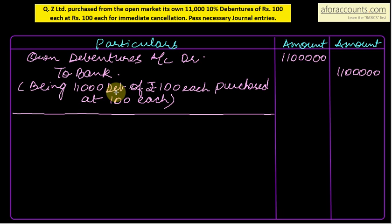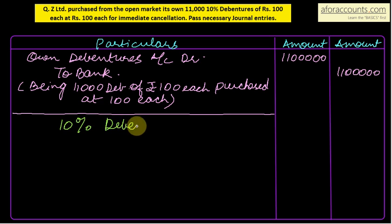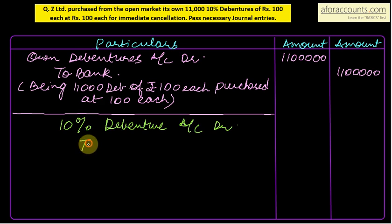Now you have to cancel the debentures. The entry to cancel the debentures: 10% debentures account debit — when they were raised they were credited, now we are cancelling so we debit them. The entry is: 10% debentures account debit to own debentures account.